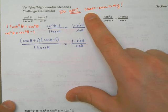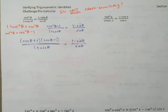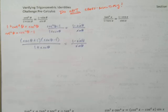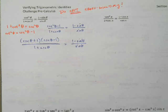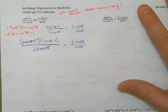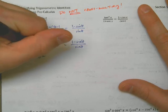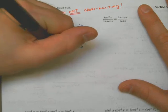I'm left with secant of x minus 1 on the left and 1 minus cosine all over cosine on the right. The right side is now the more complicated side, so I start working with that. I break it into two separate fractions: 1 over cosine and negative cosine over cosine. That's convenient because 1 over cosine is secant, and cosine over cosine is 1. So the right side is secant x minus 1, and it all checks out.